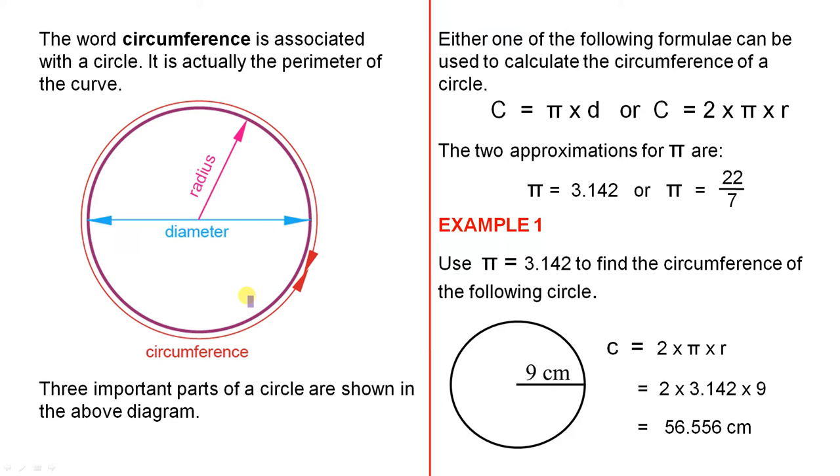Three important parts of a circle are shown in the above diagram. The distance all the way along, and that line goes through the centre, is called the diameter. The radius goes from the centre of a circle to the curve, and the distance all the way around is called the circumference, which is the same as perimeter.